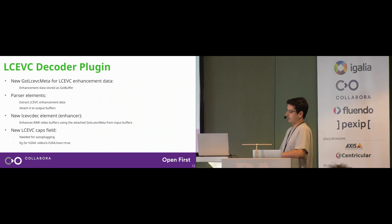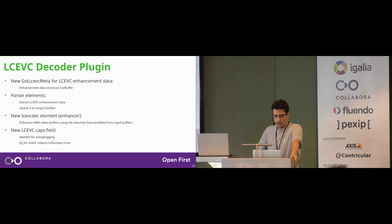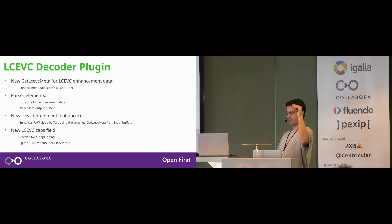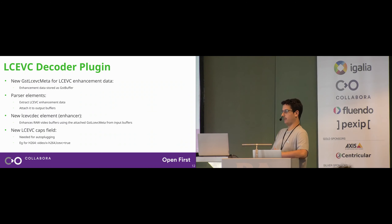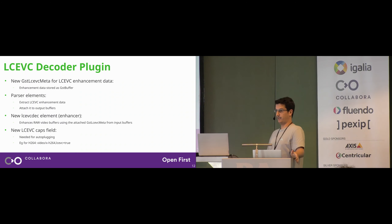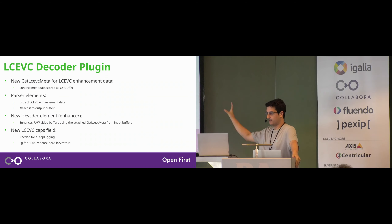For the LC-EVC decoder plugin, first we had to add new metadata called GST LC-EVC meta to store the enhancement data in the pipeline. That enhancement data is stored as a GST buffer inside the GST meta structure. The parser element is responsible for parsing the enhancement data from the video stream — in the case of H.264, from the supplemental enhanced information — and attaching that data to buffers using the new metadata, so any downstream elements can use it.